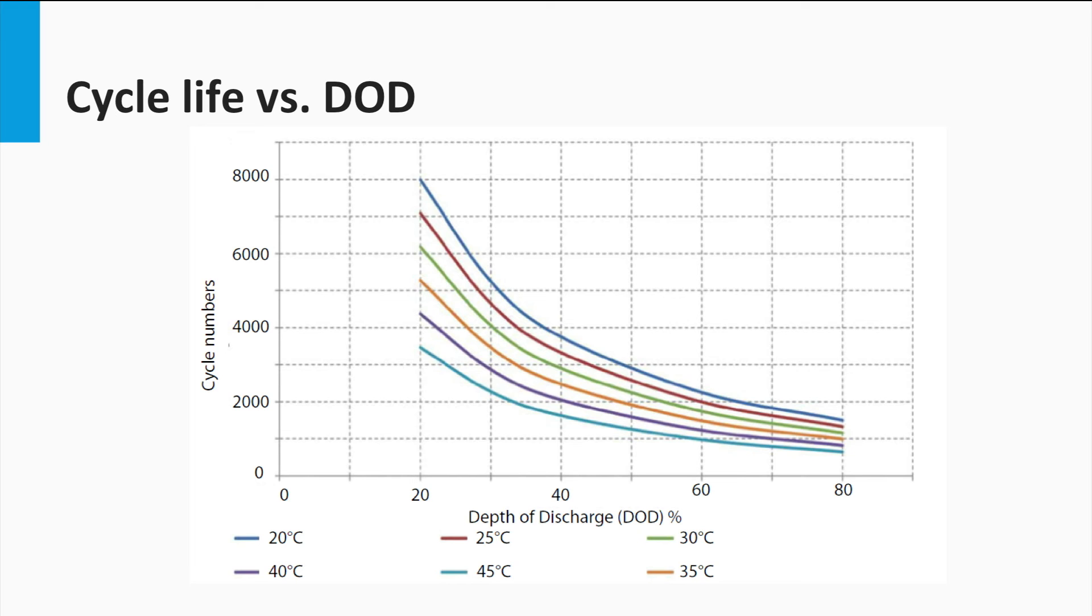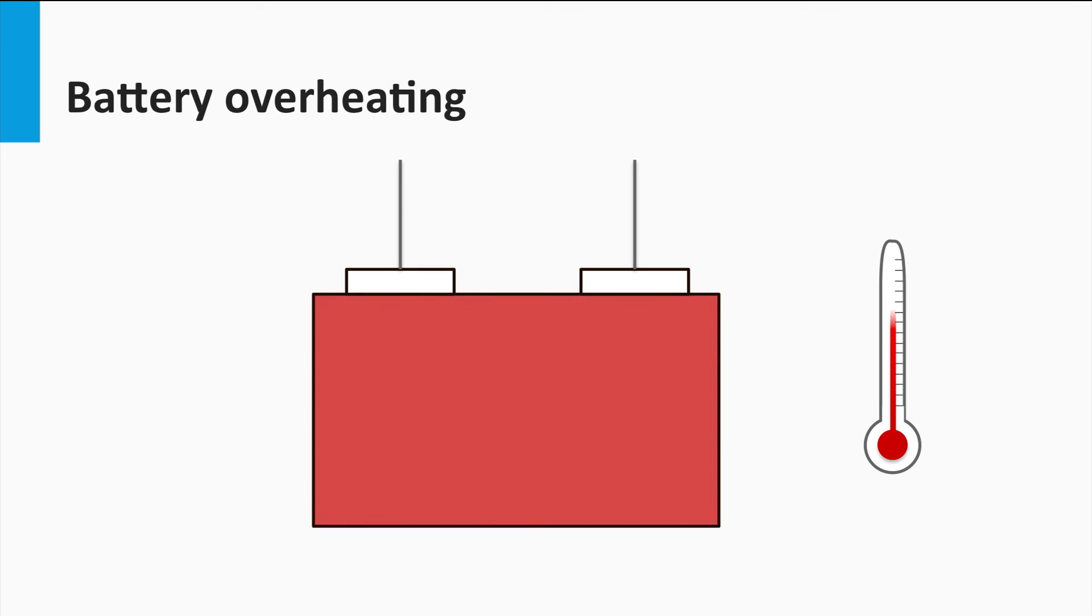The smaller the DoD, the higher the cycle life. However, such a higher cycle life would also mean that those additional cycles you gain can only help you for a smaller depth of discharge. Thus, it could be said that the battery will last longer if the average DoD could be reduced over its normal operation.